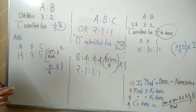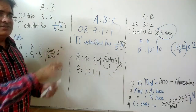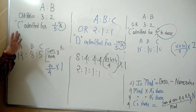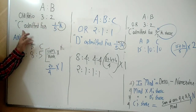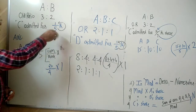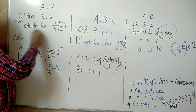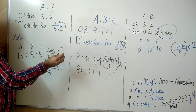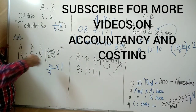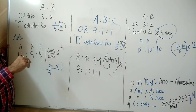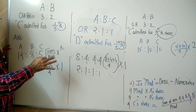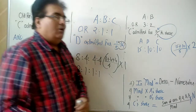This method works rapidly for this type of question where only the old ratio and the new partner's share are given — and no extra information like 'A surrenders this much, B surrenders this much' or individual sacrifice ratios. If it's that simple question, you get the new profit sharing ratio fast.